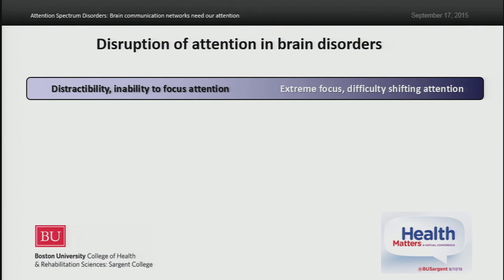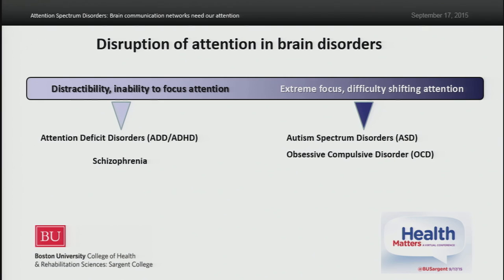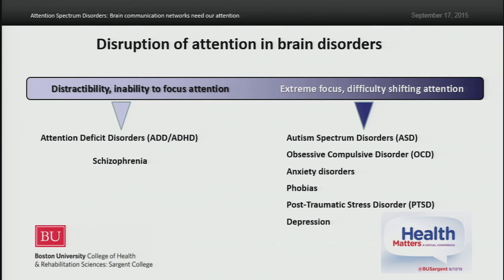Let me give a few examples of how attention is disrupted in brain disorders. On one hand, we can have excessive distractibility or inability to focus attention, typically seen in attention deficit disorders or schizophrenia. On the other hand, we might have extreme focus of attention or difficulty shifting attention, typically seen in autism spectrum disorders and obsessive compulsive disorder. In anxiety disorders, we see focused attention on the outside world through a constant search for external threats. Whereas in mood disorders, we see the opposite — focused attention on inner thoughts, with patients feeling trapped in negative internal thoughts and feelings.